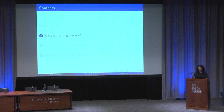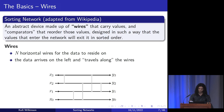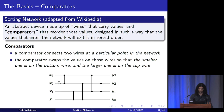So now the question is: what is a sorting network? A sorting network is an abstract device made up of wires that carry values and comparators that will reorder those values, designed in such a way that the values that enter the network will exit it in sorted order. A sorting network has n horizontal wires for the data to reside on. The data arrives on the left-hand side and travels along the wires towards the right. A comparator connects two wires at a particular point in the network, and it will swap the values on those wires so that the smaller of the two ends up on the bottom wire and the larger ends up on the top.